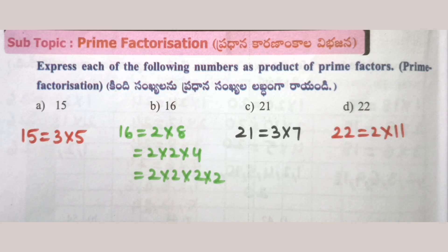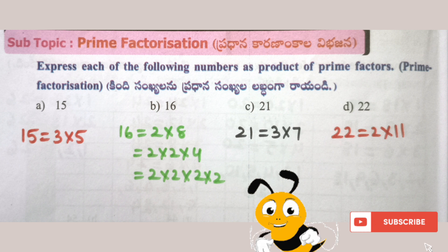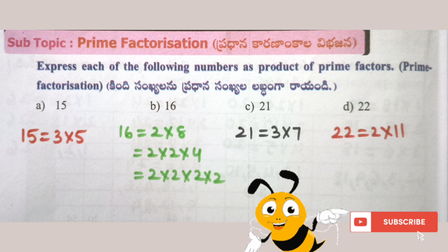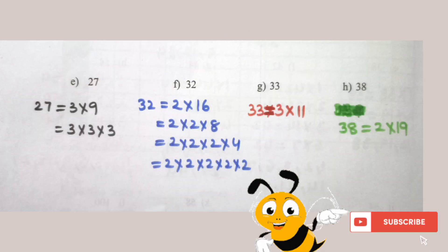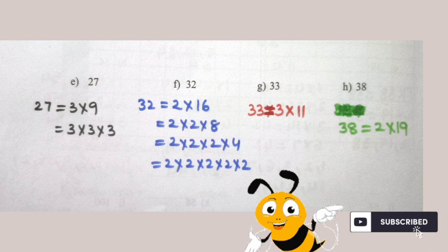Worksheet 13: Express each of the following numbers as a product of prime factors using prime factorization. 15 = 3 × 5. 16 = 2 × 8 = 2 × 2 × 4 = 2 × 2 × 2 × 2. 21 = 3 × 7. 22 = 2 × 11. 27 = 3 × 9 = 3 × 3 × 3.